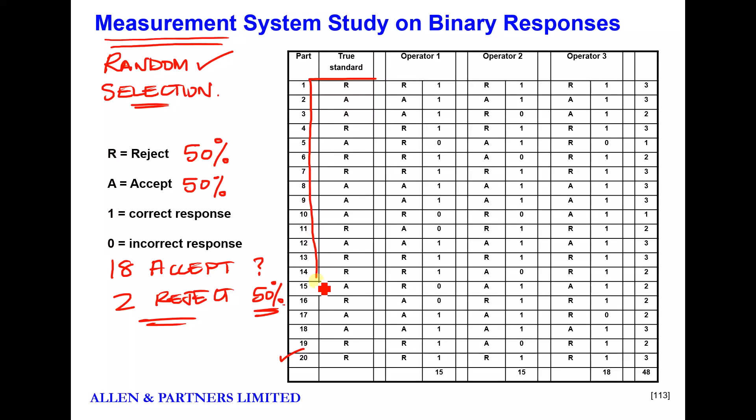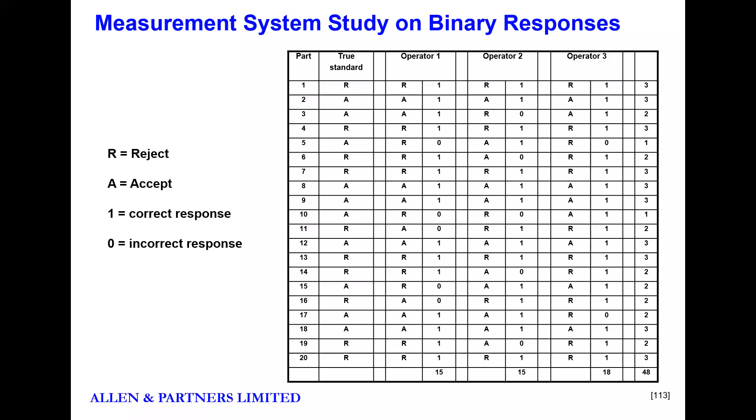It's also very important that we decide a true standard - someone who is the company holder of the standard, someone who is considered to be an expert. They've stared at these 20 parts for three days and are absolutely certain that half of them are good and half of them are rejects. In the case of measurable data there is no such thing as a true standard - we are just looking for repeatability. So we've selected deliberately, 50-50, we've identified the true standard, and we've spent a lot of time making sure that's correct.